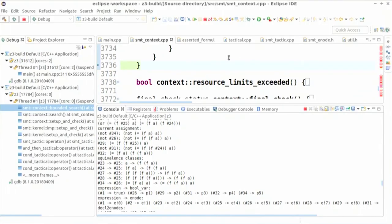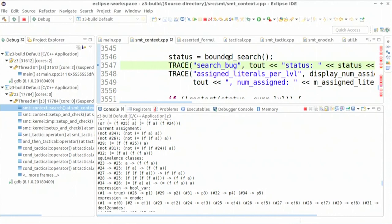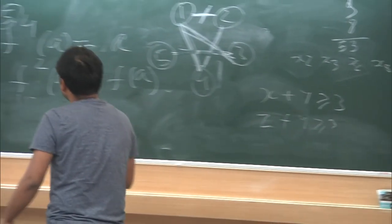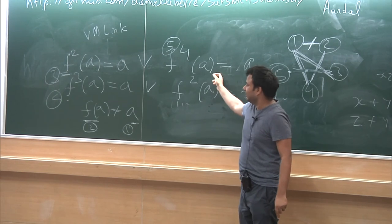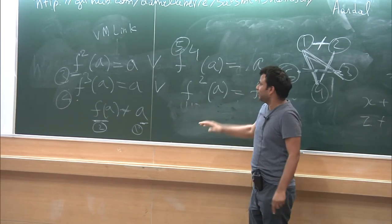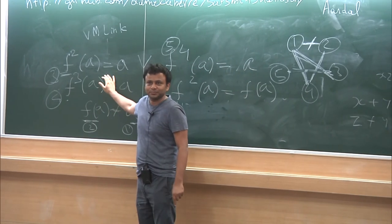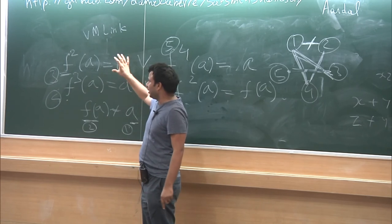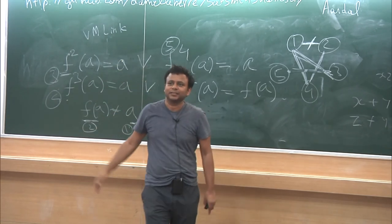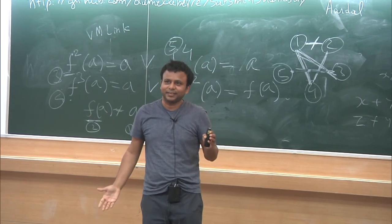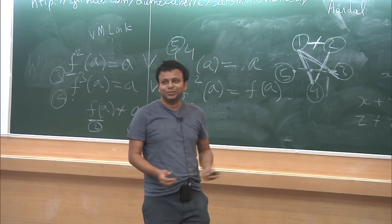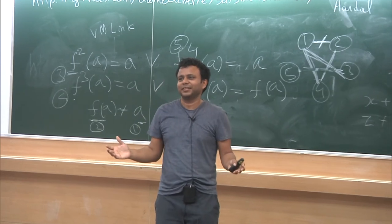Now it triggers. The conflict was detected — the decision to set that literal to false and forcing the other to true created the conflict. As a result, the solver learned a conflict clause, which must now be true. Once this learned clause is set to true, everything falls into place and the solver immediately realizes everything is UNSAT.